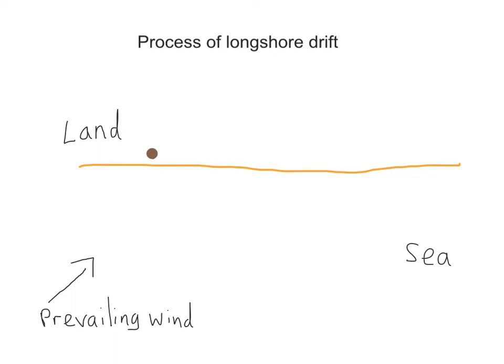Longshore drift is a coastal process along a beach and it generally moves material from one end of a beach to another. It's all determined by the prevailing wind, the most common wind affecting a beach.